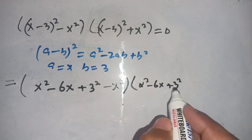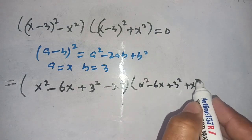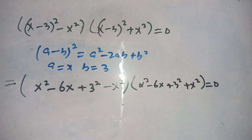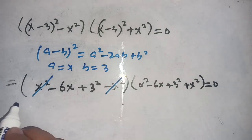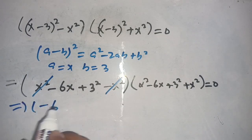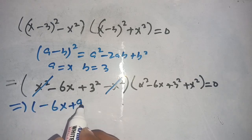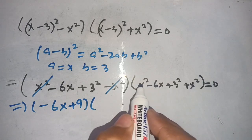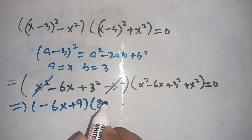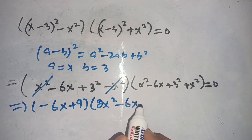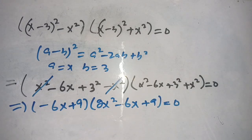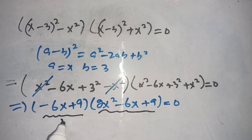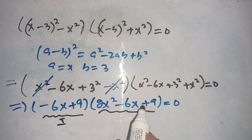We can cancel out the x squared terms since they appear with opposite signs. The remaining terms give us minus 6x plus 9 and 2x squared minus 6x plus 9. So the expression becomes (minus 6x plus 9) times (2x squared minus 6x plus 9) is equal to 0.